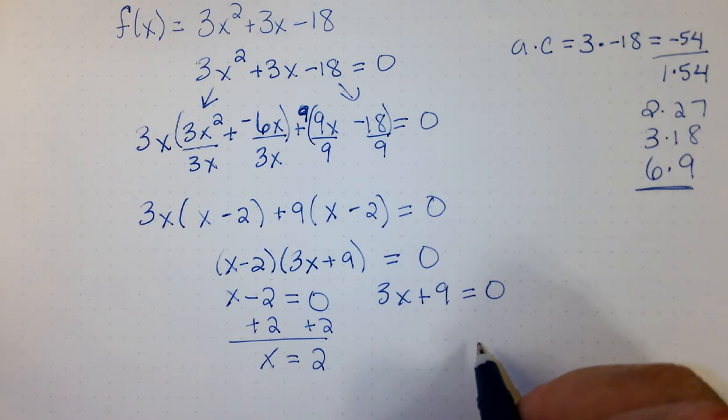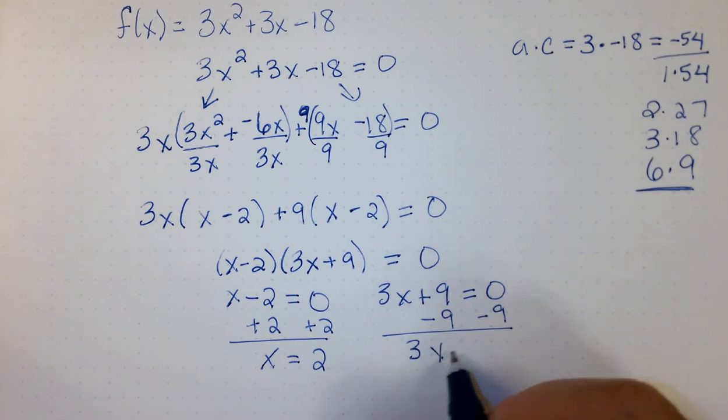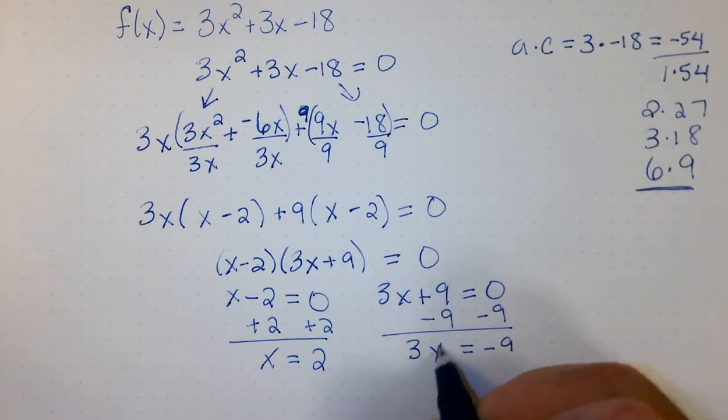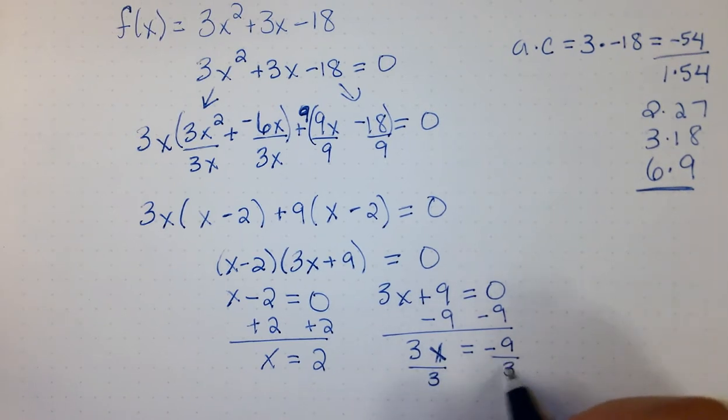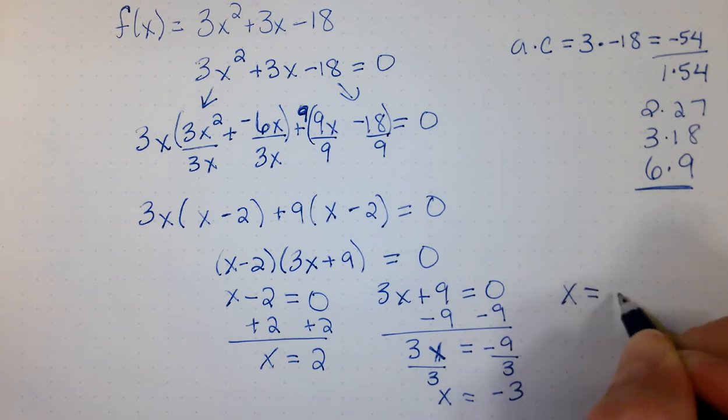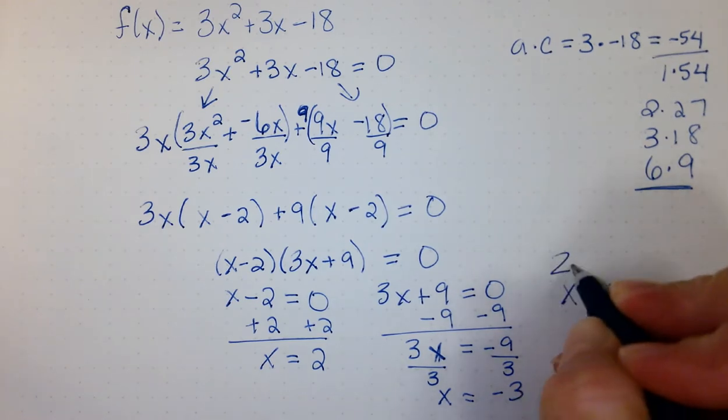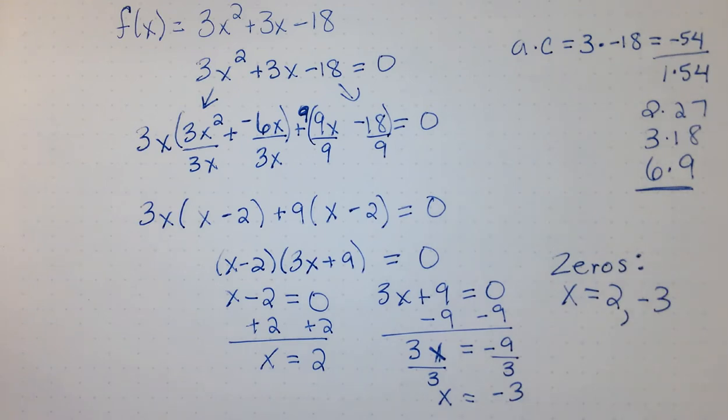And then, 3x plus 9 equals 0. We're going to subtract 9 from both sides. That will give us 3x equals negative 9. Divide by 3. x equals negative 3. Our solutions are x equals 2 and negative 3. So, the solutions to the equation, f of x equals 0, which means setting that function equal to 0, gives us what is called the zeros of the function. So, our zeros of this function is 2 and negative 3.